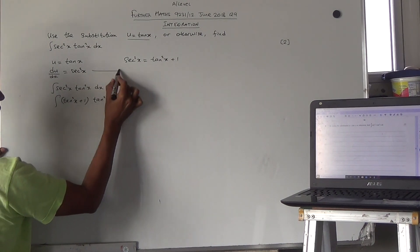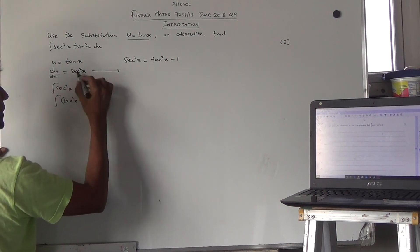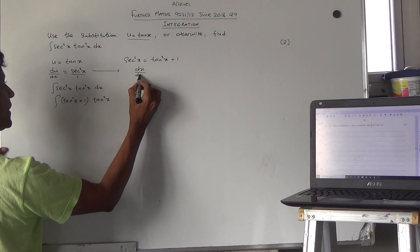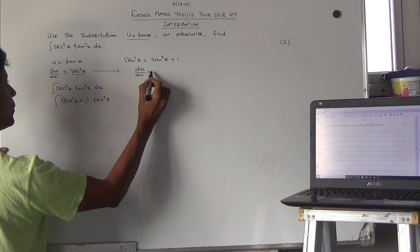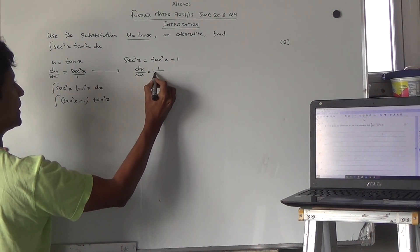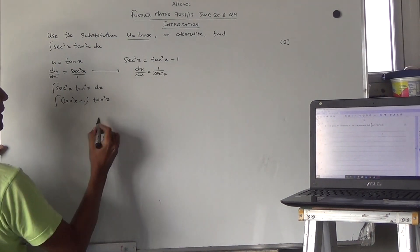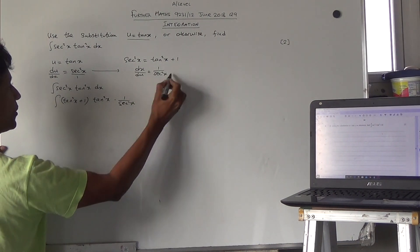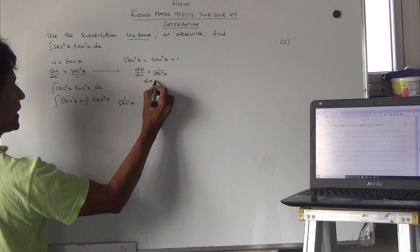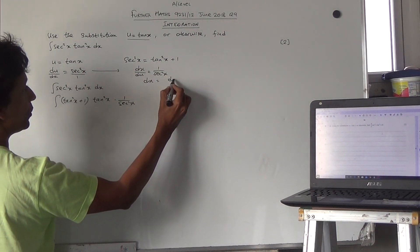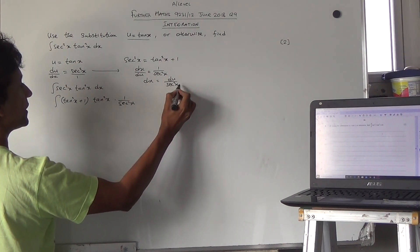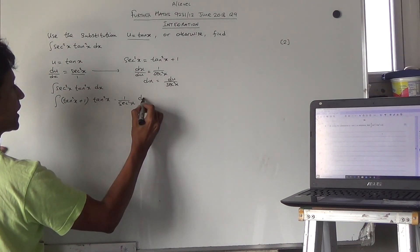What is dx? Now if du/dx = sec²x, then dx/du = 1/sec²x. So dx = du/sec²x.